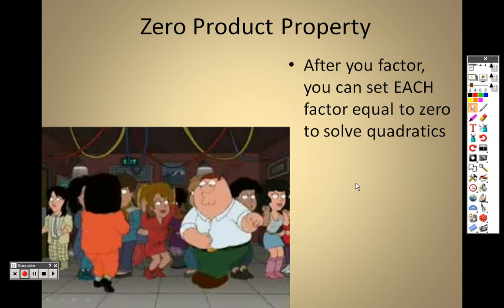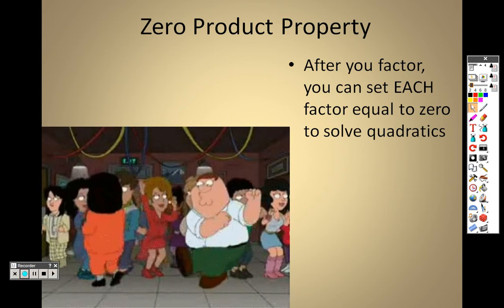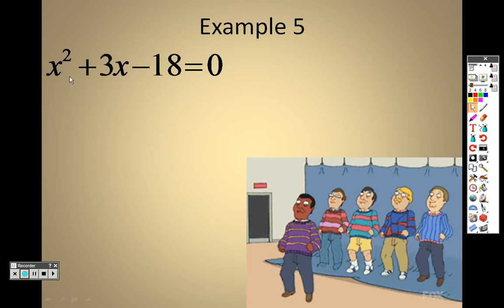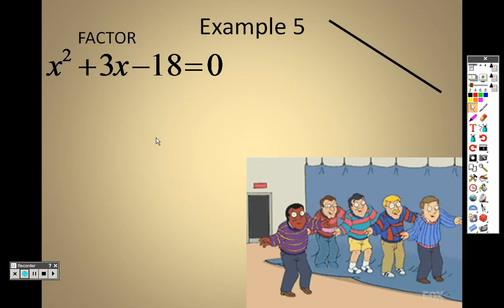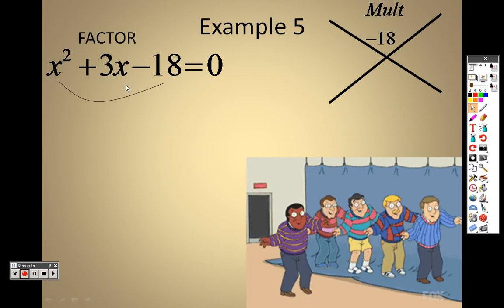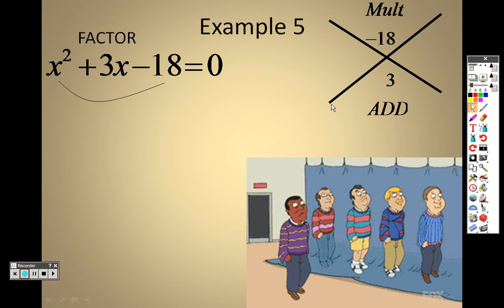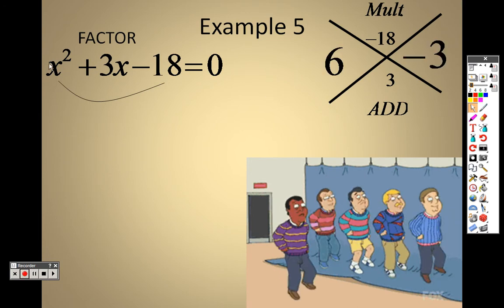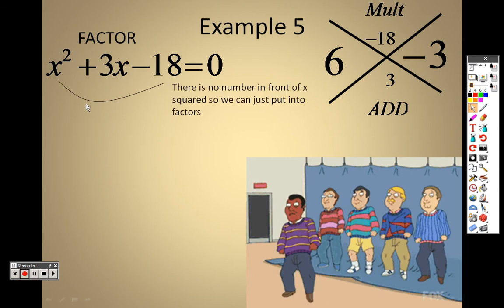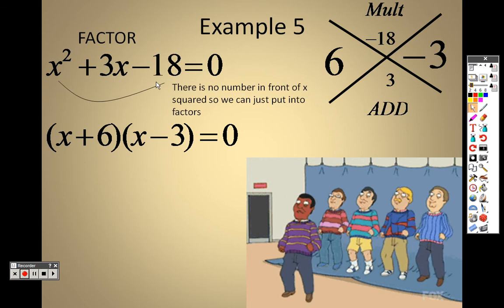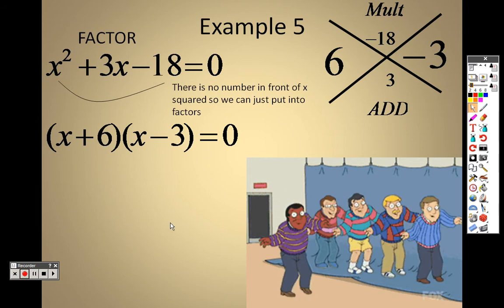So the zero product property, after you factor, you can set each to zero to solve for quadratic. So I want to sit here and try to factor this. I'm looking for two numbers, that 1 times negative 18, multiply to give me negative 18, that add to give me 3. Well, it happens to be a positive 6 and a negative 3. So since there's no number out in front of the x squared, I can just write this as x plus 6 and x minus 3.